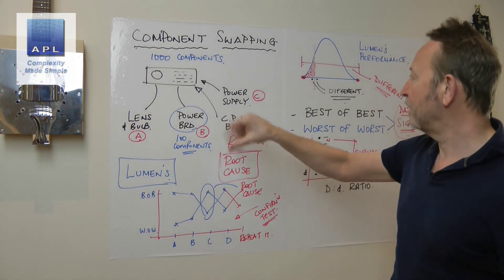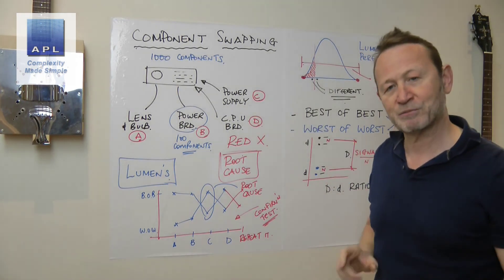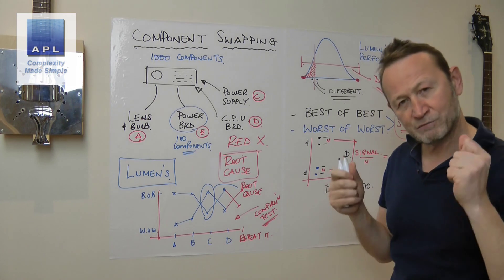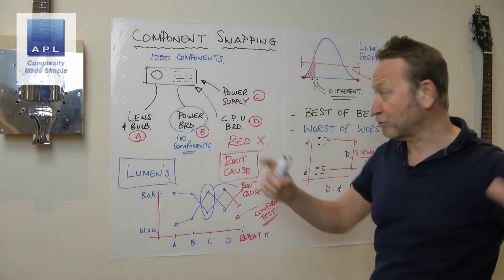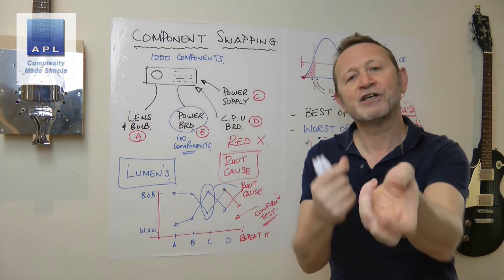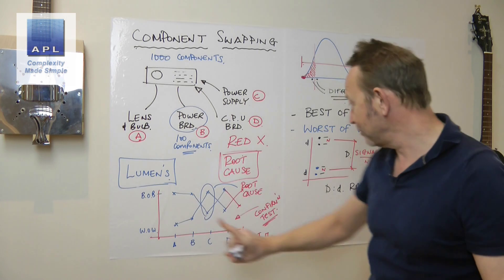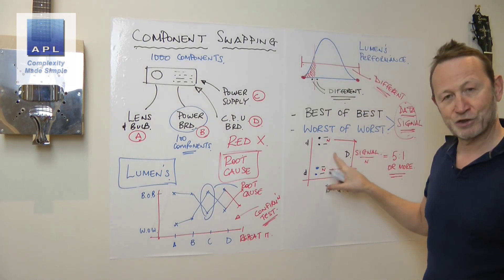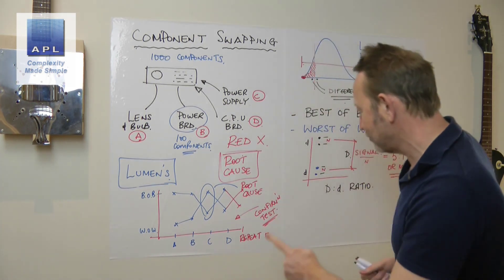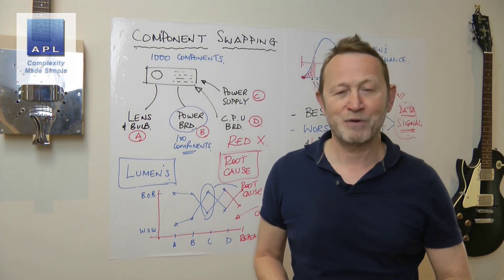So there is your component swapping, and now you're ready for further analysis into the component. Key points: Bob versus Wow — make the parts as different as possible. Decide on your four, five, six, or seven sub-assemblies to swap in and out. Make sure you have continuous data on the measurement. Do the signal-to-noise test proving the problem is in the component. Then do the swap test and the confirmation test. Those are the key elements of component swapping.